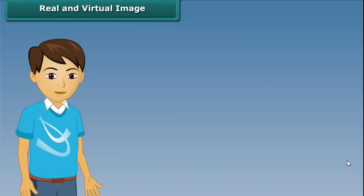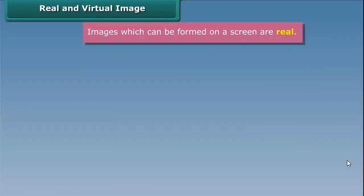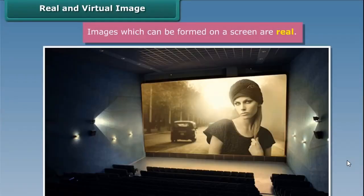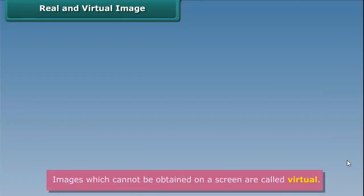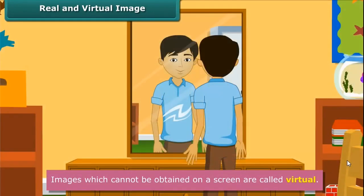Real and Virtual Image. Let us discuss what are real and virtual images. Images which can be formed on a screen are real. For example, images formed on a cinema screen are real. Whereas images which cannot be obtained on a screen are called virtual. For example, the image of our face in a plane mirror is virtual.